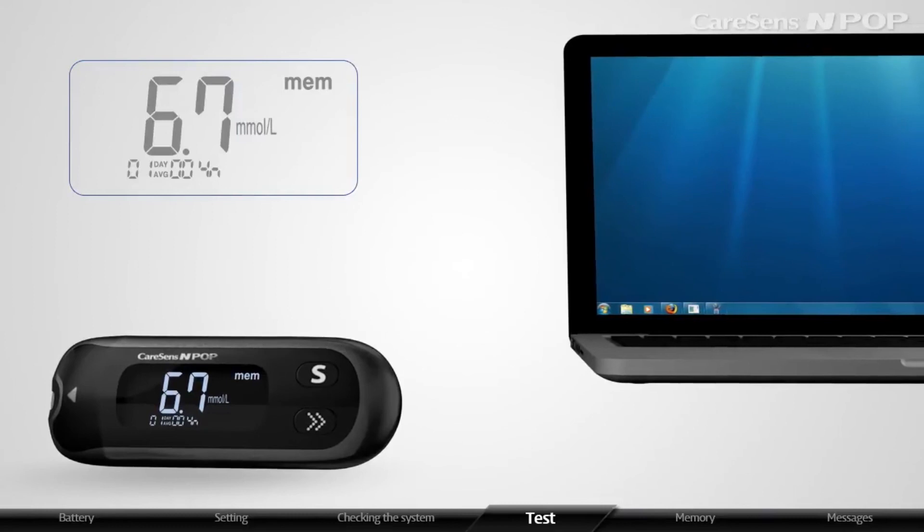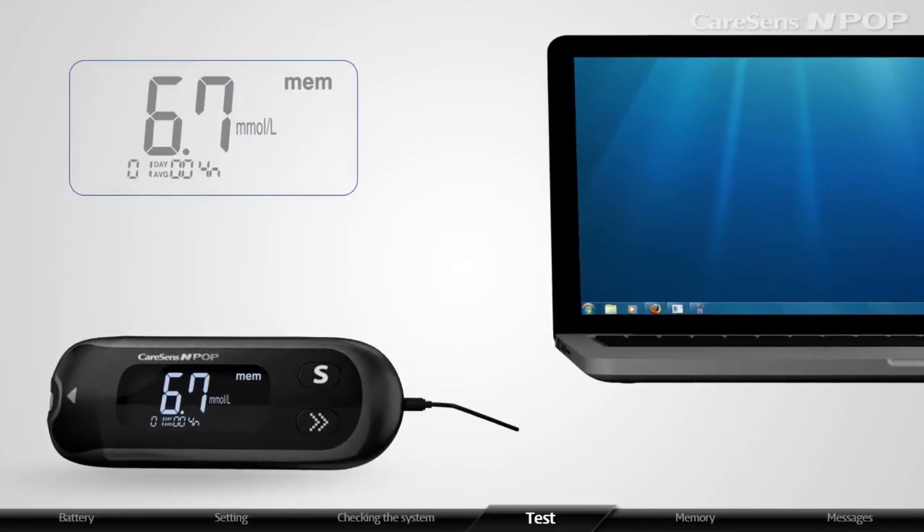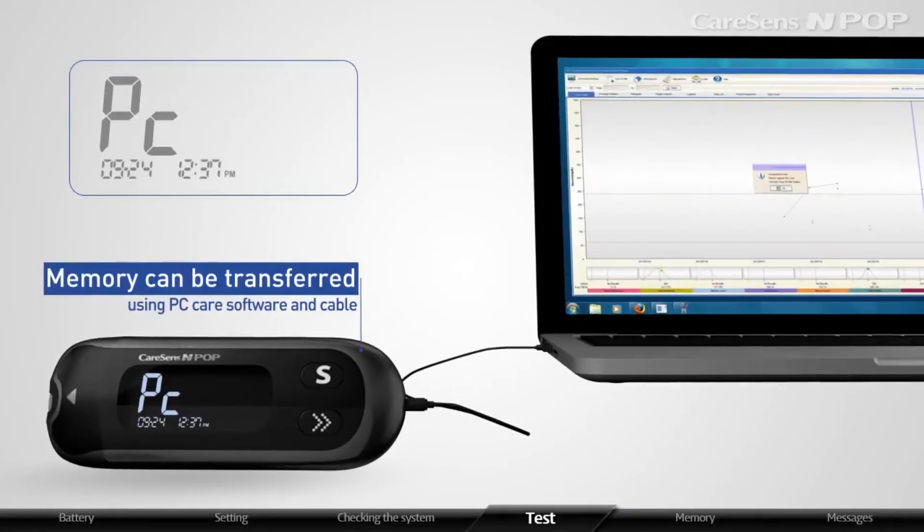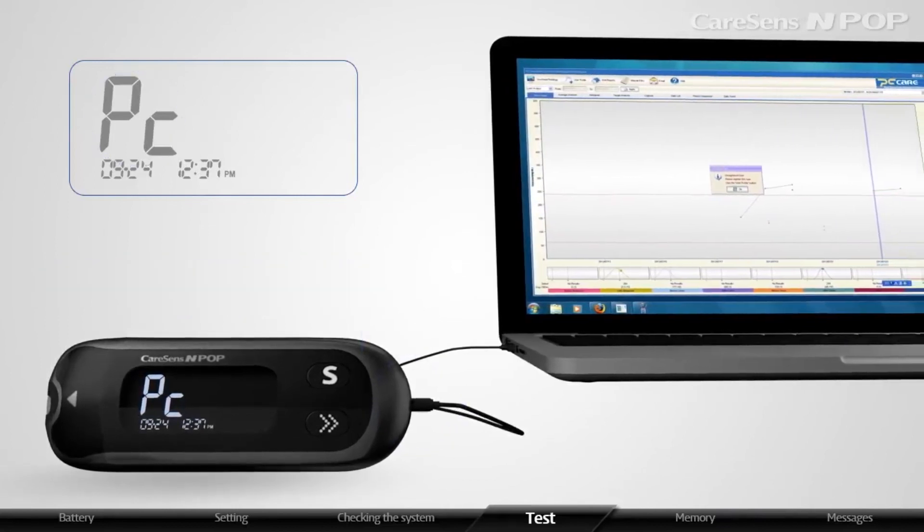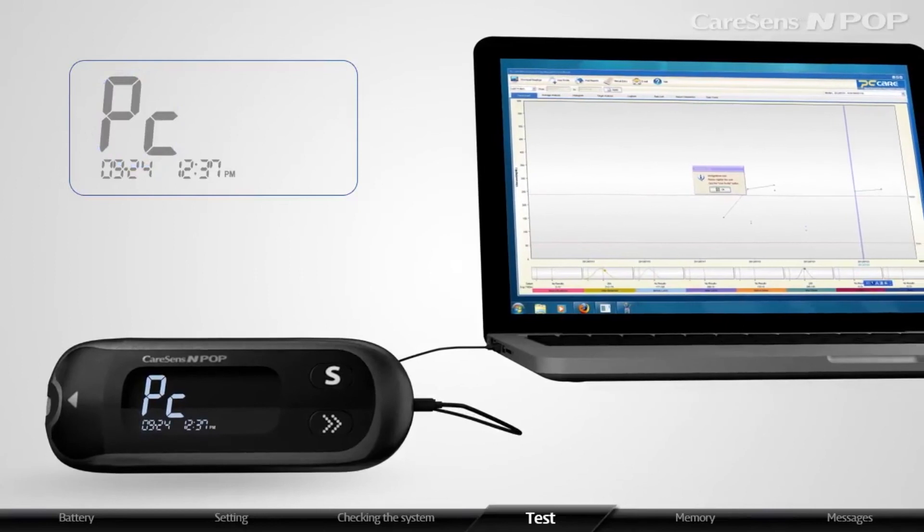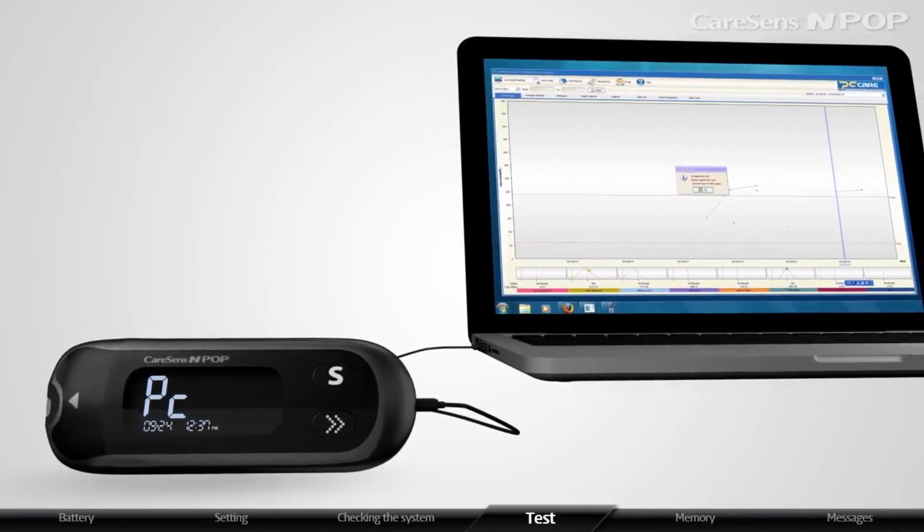Test results stored in CareSense N POP meter can be transferred from the meter to a computer using PC care software and cable. The PC is displayed when the data cable connects the meter with computer. For more information, contact your authorized iSense sales representative or visit www.isense.com.